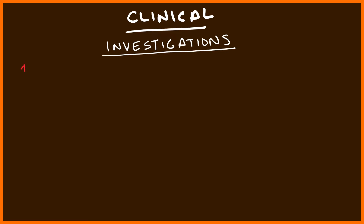There are a number of investigations consistent with Hepatitis A virus. When you see a jaundiced patient, one of the first things to look at are your liver enzymes — ALT and AST. These are typically greater than 1,000, so very, very elevated. Whenever you see this level of enzymes, you should be thinking about Hepatitis A virus as part of your differential. ALT would be greater than AST, which is consistent with a liver pathology versus an alcoholic pathology.